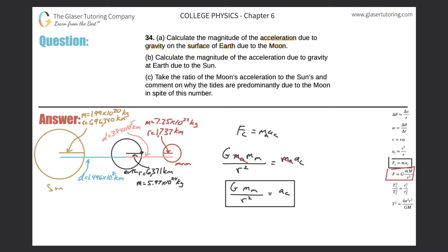So now, what do I know? I know the gravitational constant — that's just a number, 6.673 times 10 to the minus 11. What's the mass of the Moon? That has to be given or you can look it up in a table. And then what's the radius between them? The distance between the center of the Earth and the center of the Moon — but since we want the gravitational force at the surface of the Earth, I have to take this overall distance and subtract out the radius of the Earth.